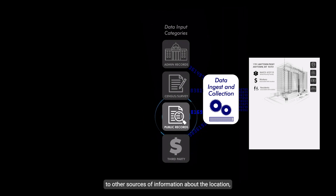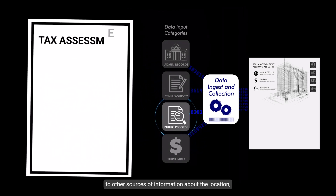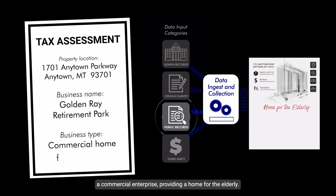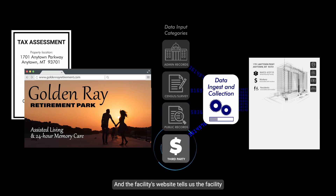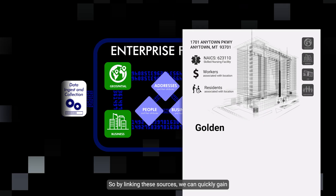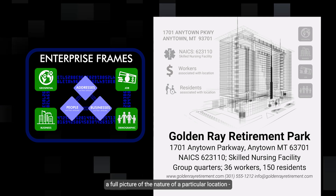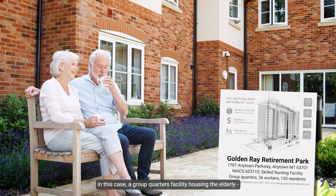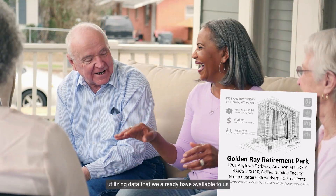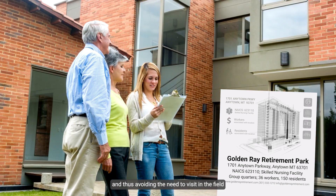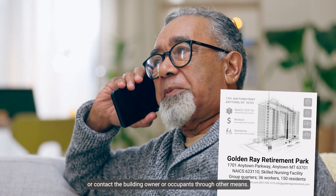By linking frames data to other sources of information about the location, we can see that publicly available property and tax assessor data lists the location as a commercial enterprise providing a home for the elderly. And the facility's website tells us the facility offers both assisted living and 24-hour memory care. So by linking these sources, we can quickly gain a full picture of the nature of a particular location — in this case, a group quarters facility housing the elderly — utilizing data that we already have available to us, and thus avoiding the need to visit in the field or contact the building owner or occupants through other means.